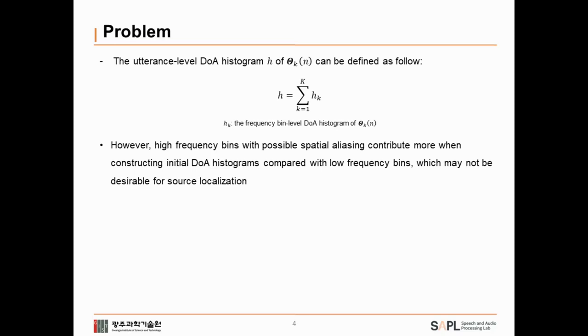DOAs are estimated from peaks of this histogram H. However, in this method, high frequencies suggest more DOA candidates than low frequencies. So, we expected that would make it difficult to estimate DOAs. So,